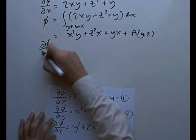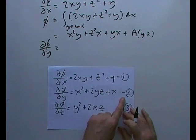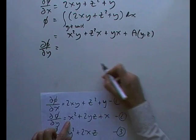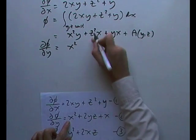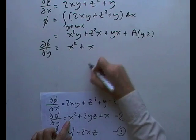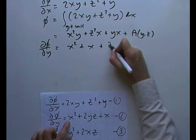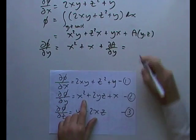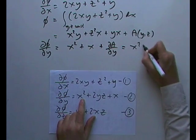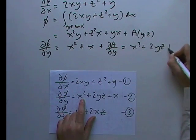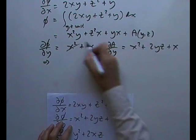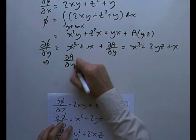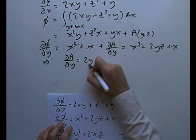Differentiating that with respect to y should give me my next equation, so using 2 now. So differentiating that with respect to y would give me x squared plus x, plus the derivative of that with respect to y, and that should equal this expression. So that should equal x squared plus 2yz plus x. Well, those terms are the same there, so that means that partial a by partial y should be 2yz.